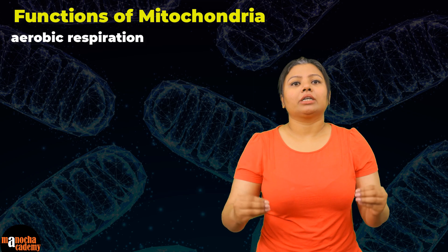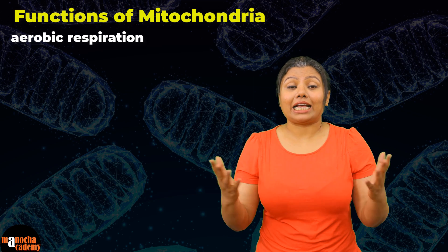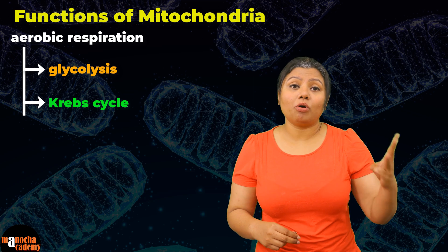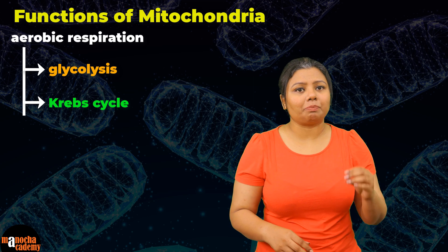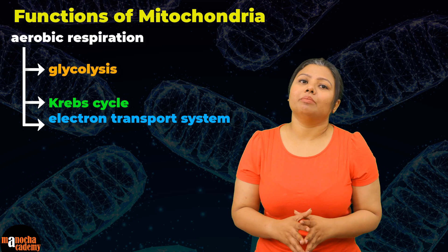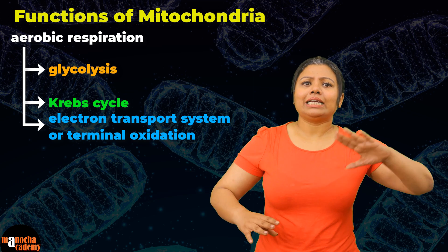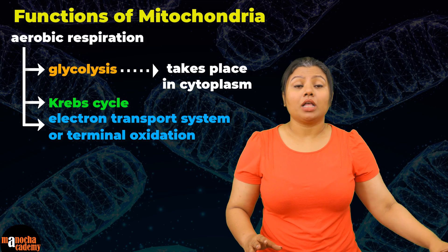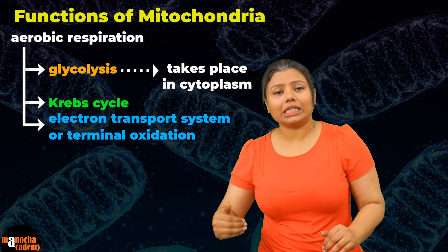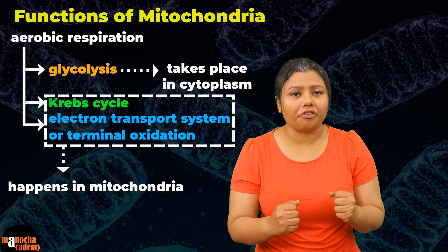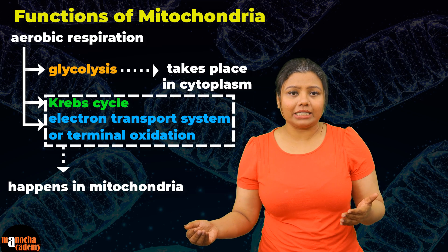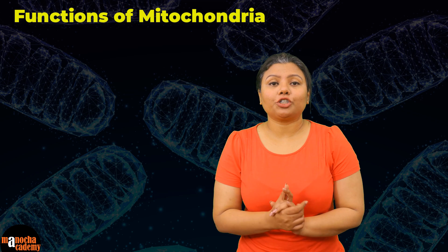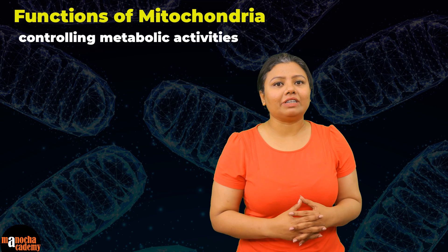Aerobic respiration takes place inside the mitochondria, and it has two steps: glycolysis and Krebs cycle, and one more step known as the electron transport system, electron transport chain, or terminal oxidation. The first step, glycolysis, takes place in the cytoplasm because all the enzymes required for that process are present there. The second step, Krebs cycle, and the third step, terminal oxidation, take place in the mitochondria, because the enzymes required are present in the inner mitochondrial membrane, the matrix, or the perimitochondrial space.